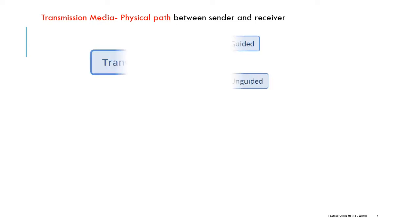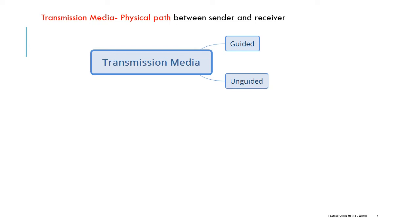Transmission media is a physical path between sender and receiver. Transmission media can be classified as guided transmission media or wired transmission media, and unguided transmission media or wireless transmission media. In every case, electromagnetic waves are transmitted through these transmission media.